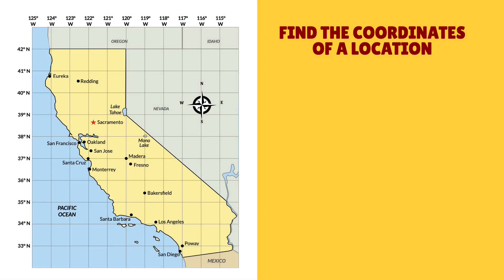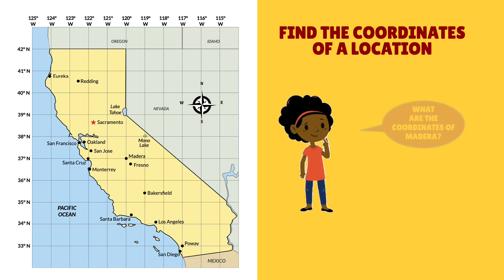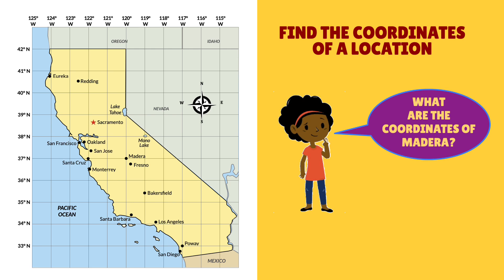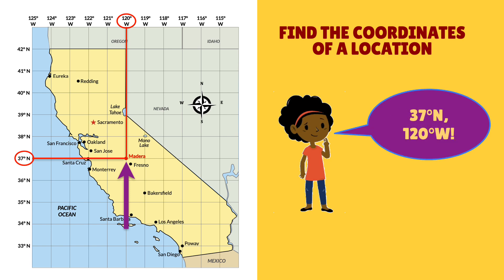With a map that has a coordinate grid, you can also do the opposite and find the coordinates of locations on the map. Let's take the city of Madeira, for example. What are the coordinates of Madeira? First we need to find Madeira — and there it is. Then we need to find the latitude, which comes first, and that's at 37 degrees north. And finally, we need to find the longitude, and that's at 120 degrees west. So Madeira is at 37 degrees north and 120 degrees west.